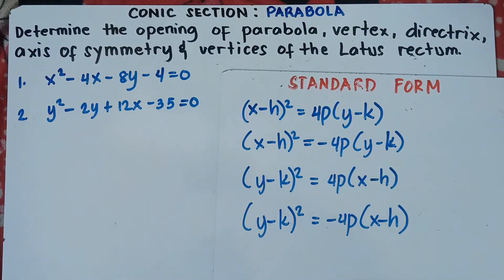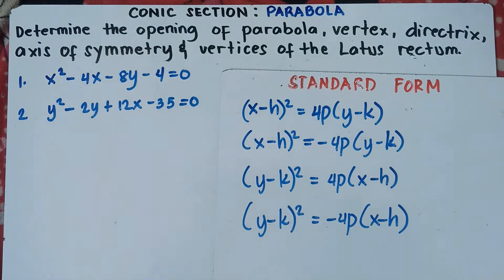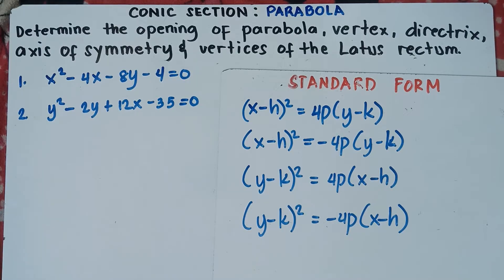We are told to determine the opening of the parabola, the vertex, the directrix, the axis of symmetry, and the vertices of the latus rectum. This is actually part 2 of our video class. Feel free to see the link in the description below for part 1, where our vertex is at (0,0). This time it will be tricky since our vertex will not be at (0,0), and we will do completing the square.